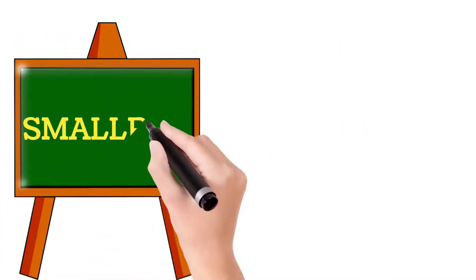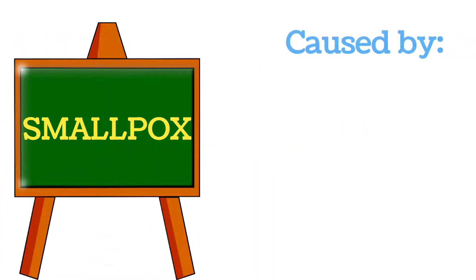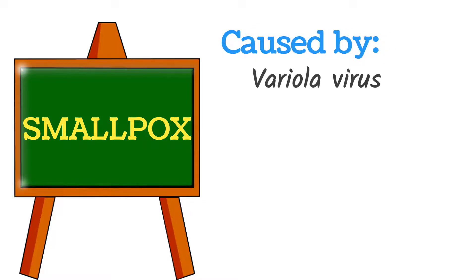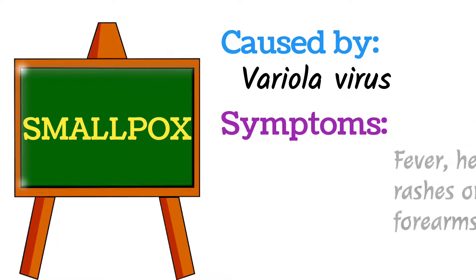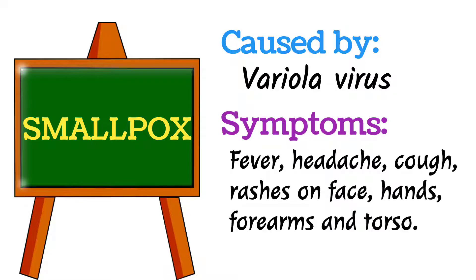Next is Smallpox. Smallpox is caused by the variola virus and this disease is spread from person to person, making it a communicable disease. The symptoms include fever, headache, coughing, and rashes that develop on the face, hands, forearm, and torso. It is a highly communicable disease.